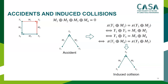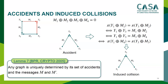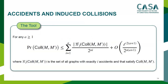Consider a subgraph where all labels sum to zero. Suppose y_1 to y_2 and y_3 to y_2 collide — this gives pi(y_1 + m_1) = pi(y_3 + m_2). Because of the linear relationship and the label sum being zero, the second equation is implied by the first. We call the first collision an accident and the second an induced collision. Bellare et al. showed that any structure graph can be uniquely determined by its set of accidents.